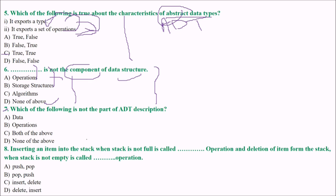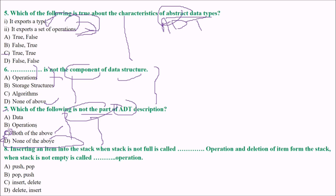Next: which of the following is not part of ADT description? The answer is D — none of the above. Data and operations are both part of the ADT description. ADT represents the user view: it doesn't reveal what is happening inside. The user only knows what operations can be applied. So data and operations together form the ADT description.